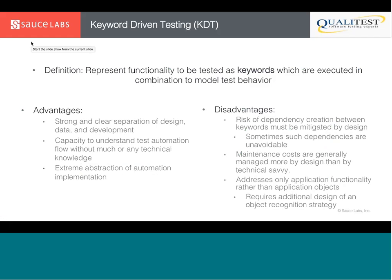KDT is an approach where we model the functionality of an application as keywords, which are then executed in combination to produce the behavior we want from our tests. KDT can be juxtaposed with page object design — with page object we model the UI to expose functionality as services for our code to consume, whereas in KDT we come at it from the opposite angle, modeling business rules into keywords. The UI is implemented on the back of these keywords, but we're really modeling functionality rather than the user interface.